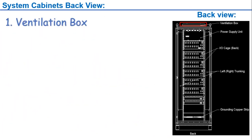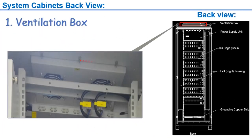Now we will see the back view of the system cabinet. The first section in the back view is the ventilation box, which is used to maintain the panel temperature and for heat dissipation of panel equipment.